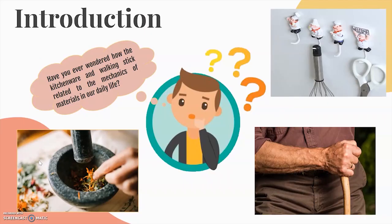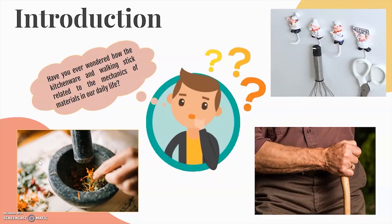Have you ever wondered how the kitchenware and walking stick are related to the mechanics of material in our daily life? Mortar and pestle are implements used since ancient times to prepare ingredients or substances by crushing and grinding them into fine paste or powder. The mortar is a bowl typically made of hard wood, metal, ceramic or hard stone such as granite, while the pestle is a heavy and blunt club-shaped object. The substance to be ground is placed in the mortar where the pestle is pressed and rotated onto it until the desired texture is achieved. In this assignment, the kitchenware that we have chosen for demonstrating the real-life cases in mechanics of material are mortar and pestle and kitchen hook. For a biomedical device, we have chosen a walking stick to perform the evaluation of stress and its deformation due to compound load.